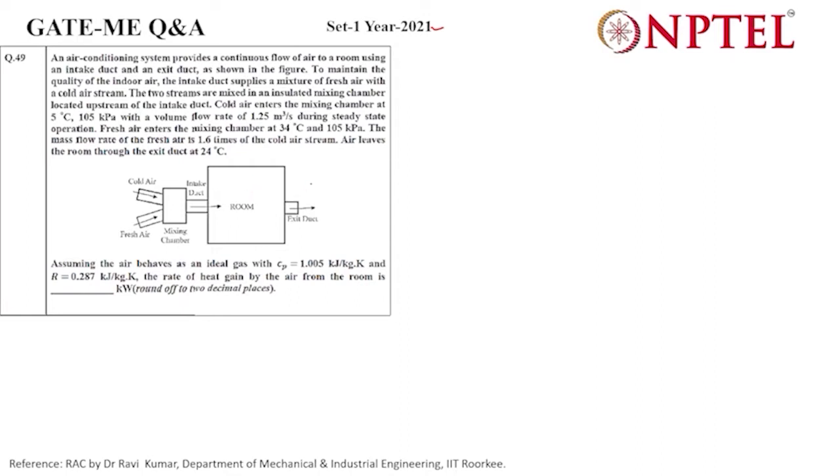This is the broad overview summary. Now we'll read the problem. Let's suppose these are the two streams and this is the mixing chamber. The resulting stream comes from here, and this is our room. The mixing chamber is here, this is our room, and from here the air exits.